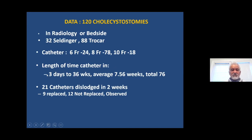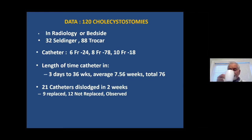The reason certain patients had the catheter for only three days is that they went to surgery and the catheter was taken out. In 21 patients — about 15% — the catheter was dislodged within two weeks. Dislodgement of the catheter is a very important complication. You must secure the catheter because you have produced a hole in the gallbladder, and you don't want that hole to leak bile into the peritoneal cavity.